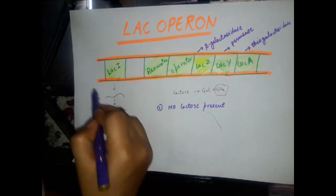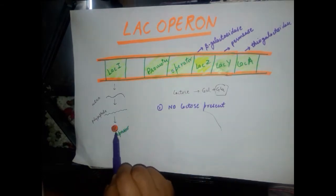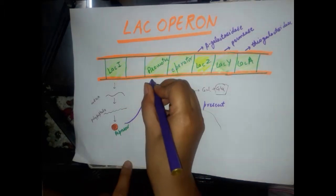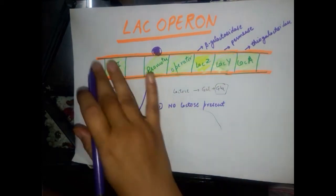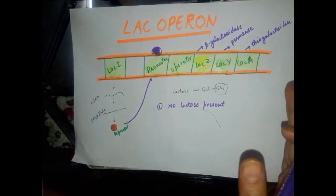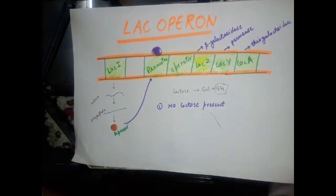This repression happens with the help of a gene present upstream of the promoter, known as lacI. The lacI gene encodes a repressor polypeptide. In the no-lactose condition, this repressor binds to the promoter and does not allow RNA polymerase to move forward to transcribe these genes. Hence transcription is halted, no enzymes are synthesized, and the purpose is served — enough glucose is present and no lactose-metabolizing enzymes are needed.